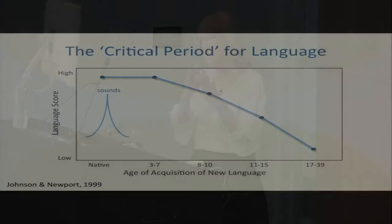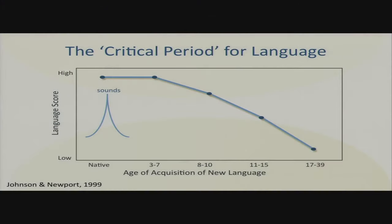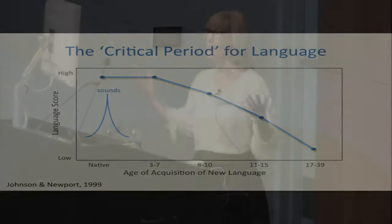In this broad curve, there are little curves specifying different aspects of language learning. The first one — learning the sounds of language — is the one we're going to focus on today. For babies to acquire words, they have to know which sounds in their language are contrastive. Every language uses about 40 to 44 contrastive elements. Baby's first job is to figure out which sounds are going to be used contrastively in their language.